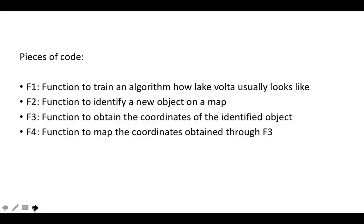A second function will help us identify new objects on the map, like that hot pink triangular shape we saw two slides ago. A third function will help us obtain the coordinates of the identified objects. And lastly, a function that will help us map those coordinates on a Google Map obtained through function three.